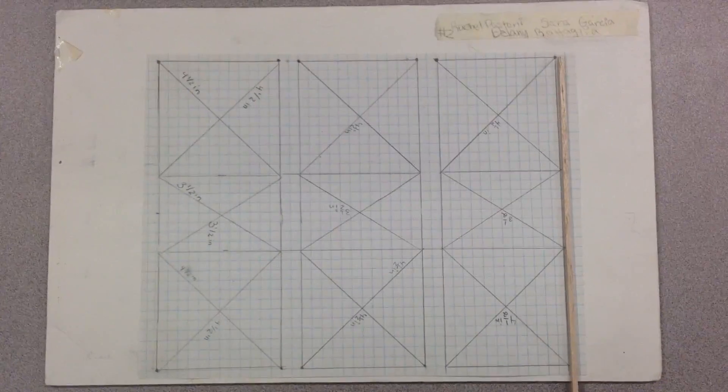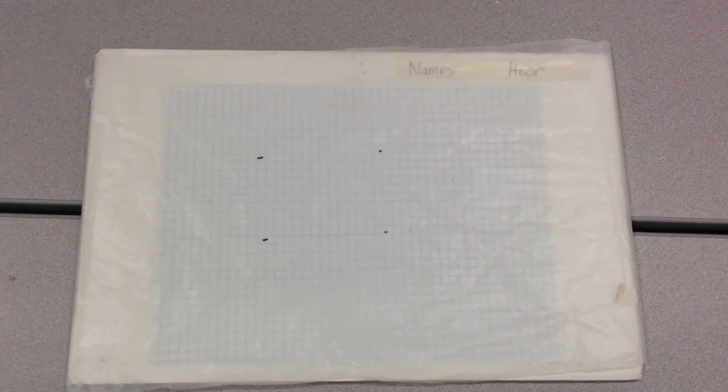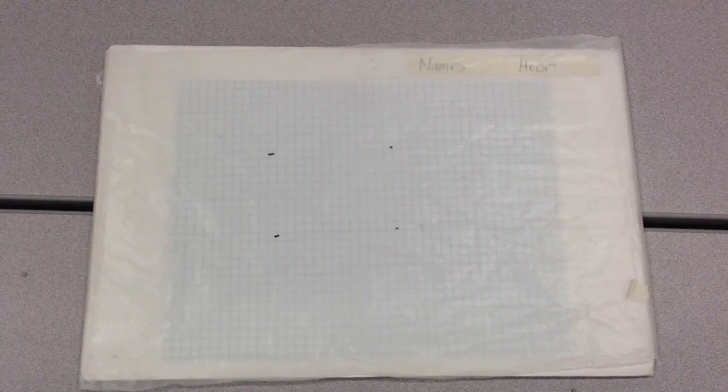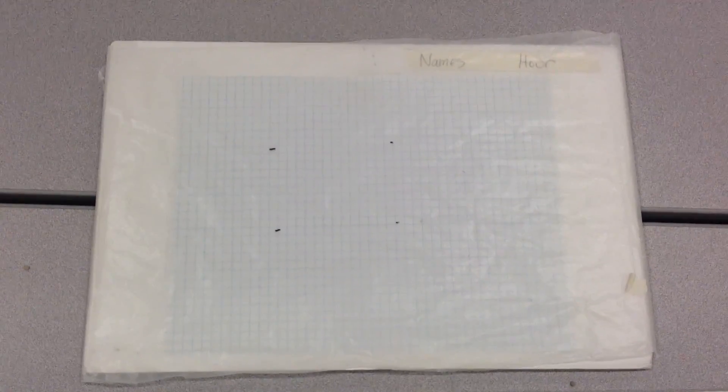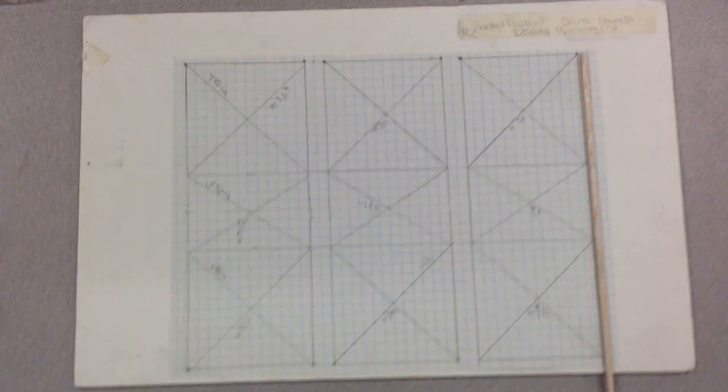Before we begin the actual construction of our tower panels with all the balsa sticks, we take our design and wrap it with a piece of wax paper. We have foam board, which we actually tape the designs to. But after you cover the design with wax paper, then you can start the construction process, where you basically lay down a stick.